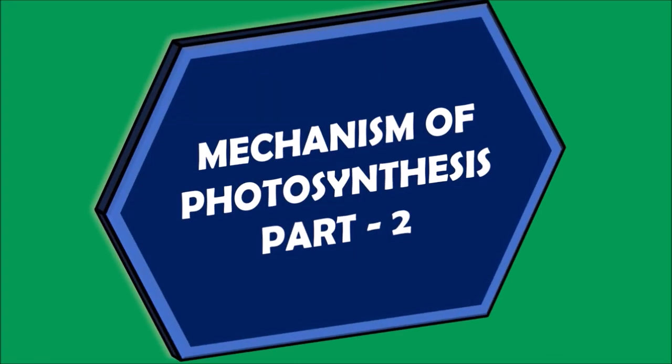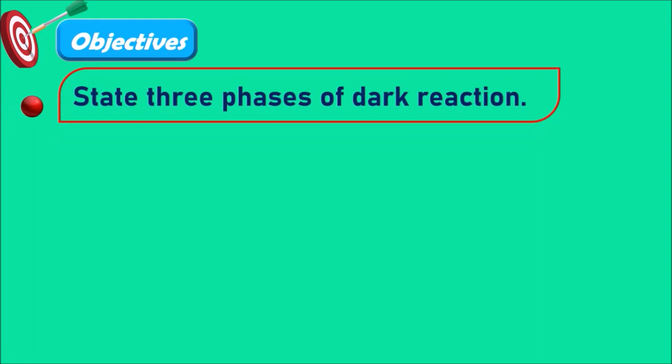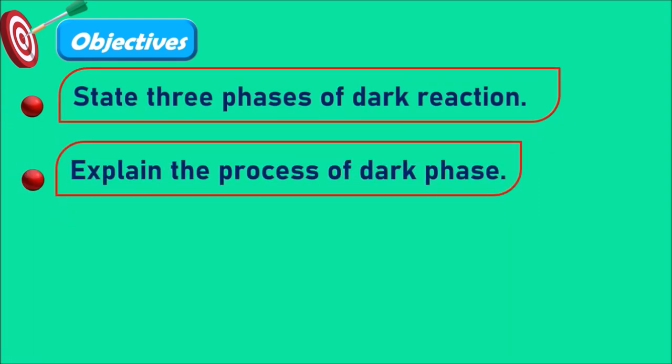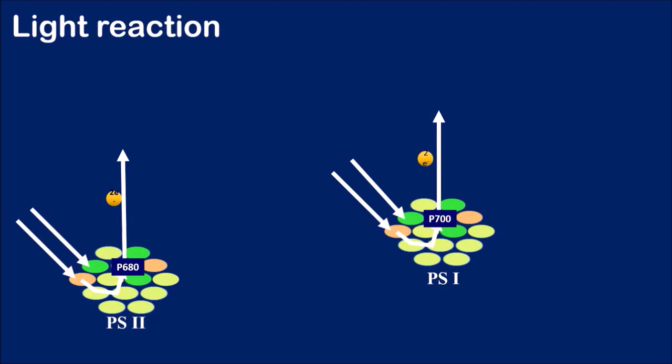Mechanism of photosynthesis part 2: how carbon dioxide fixation leads to glucose formation. Objectives: By the end of this video you will be able to state three phases of dark reaction, explain the process of dark phase, and give reasons why it is called light independent reaction and biosynthetic reaction.